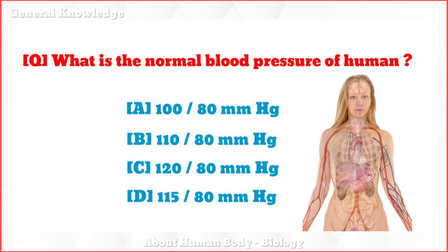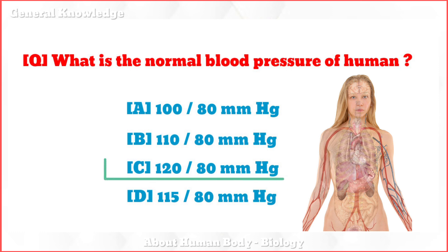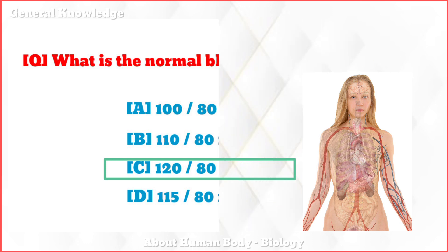What is the normal blood pressure of a human? The correct answer is option C: 120/80 mmHg.